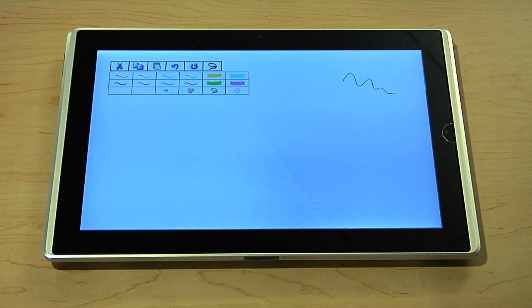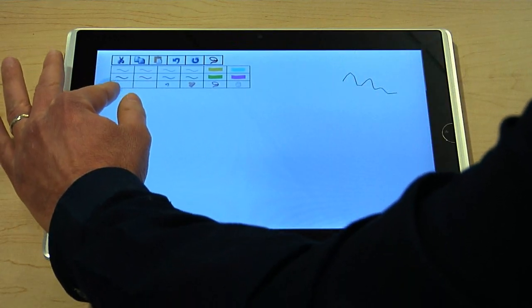If I want to get rid of the menu I can just tap anywhere and the menu disappears, then I can get it back very easily.